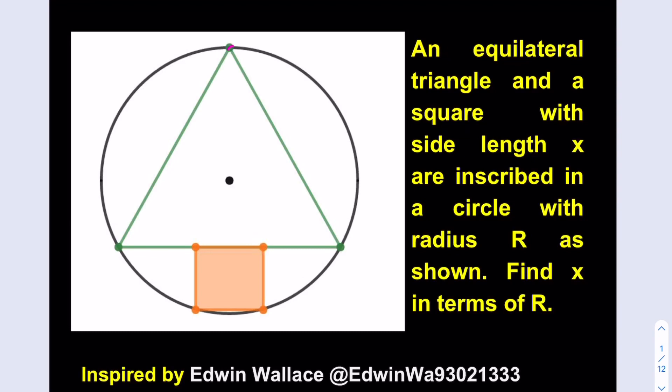An equilateral triangle and a square with side length x are inscribed in a circle with radius r as shown. Find x in terms of r. At this point you can pause the video and try the problem yourself first.